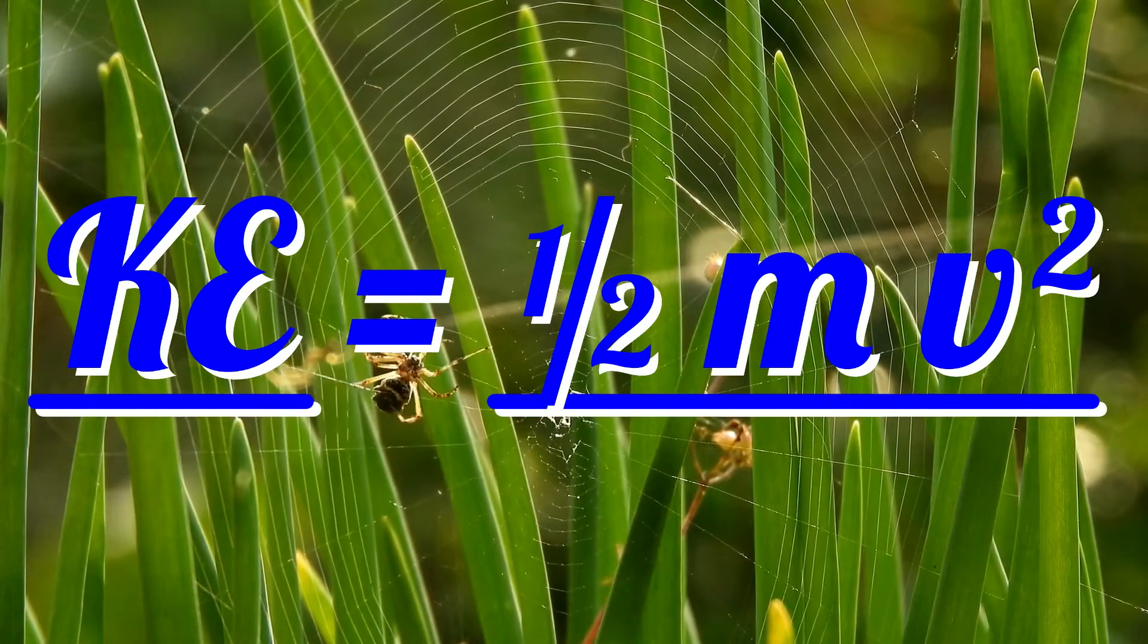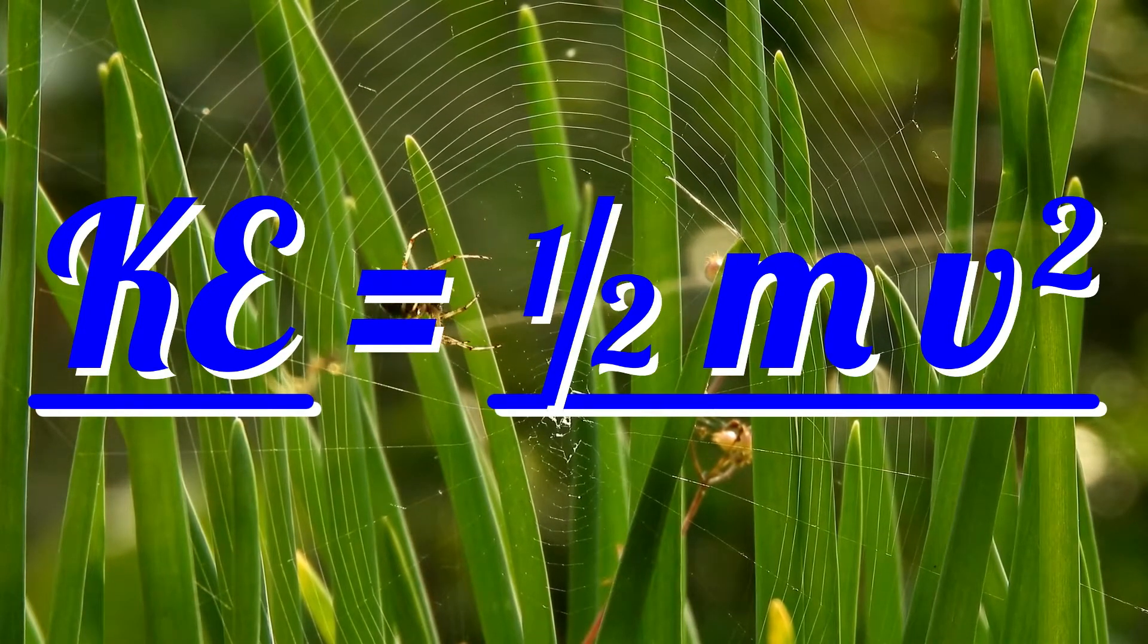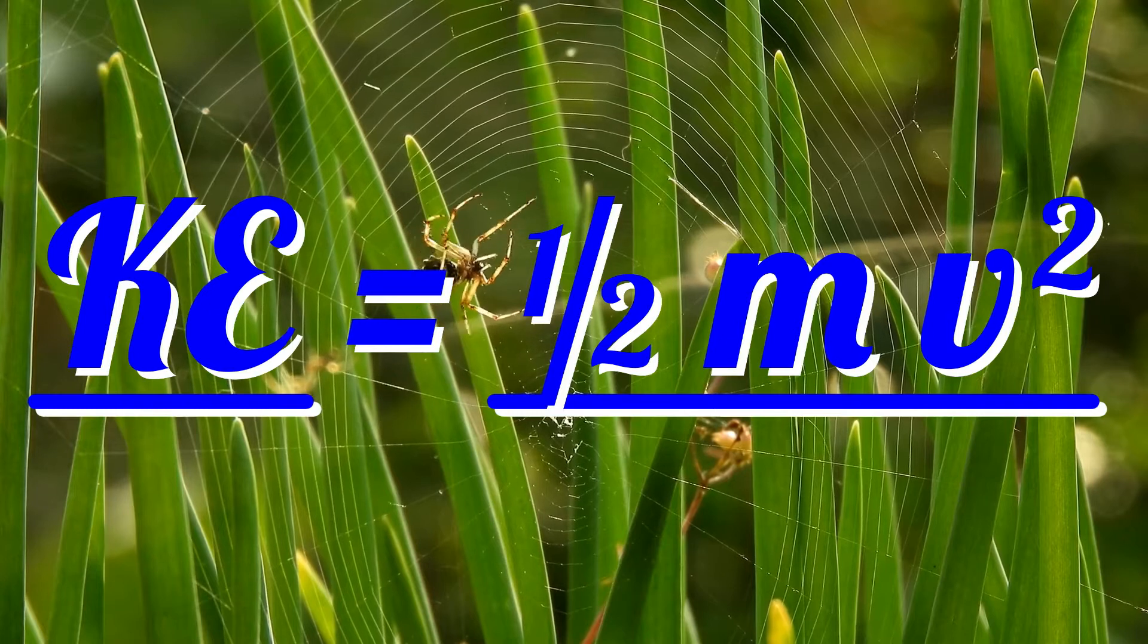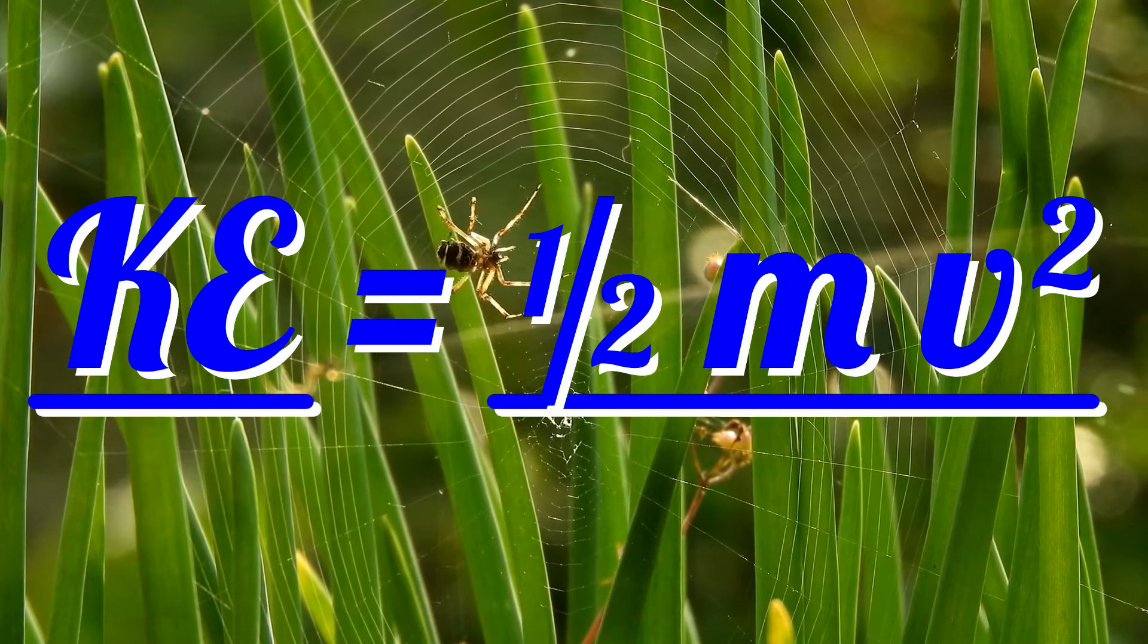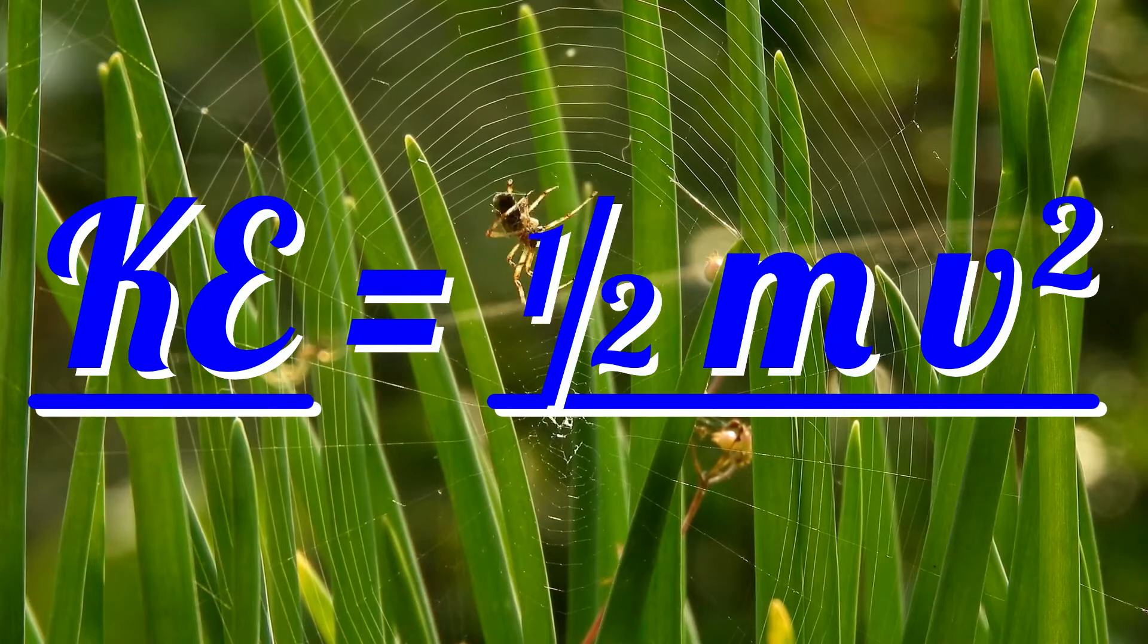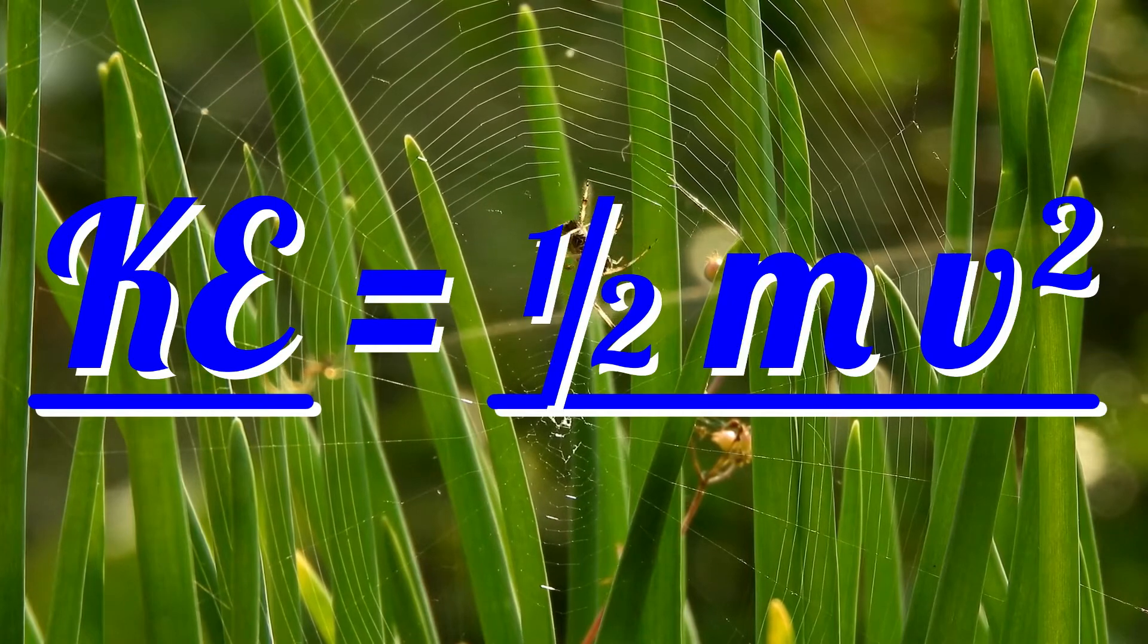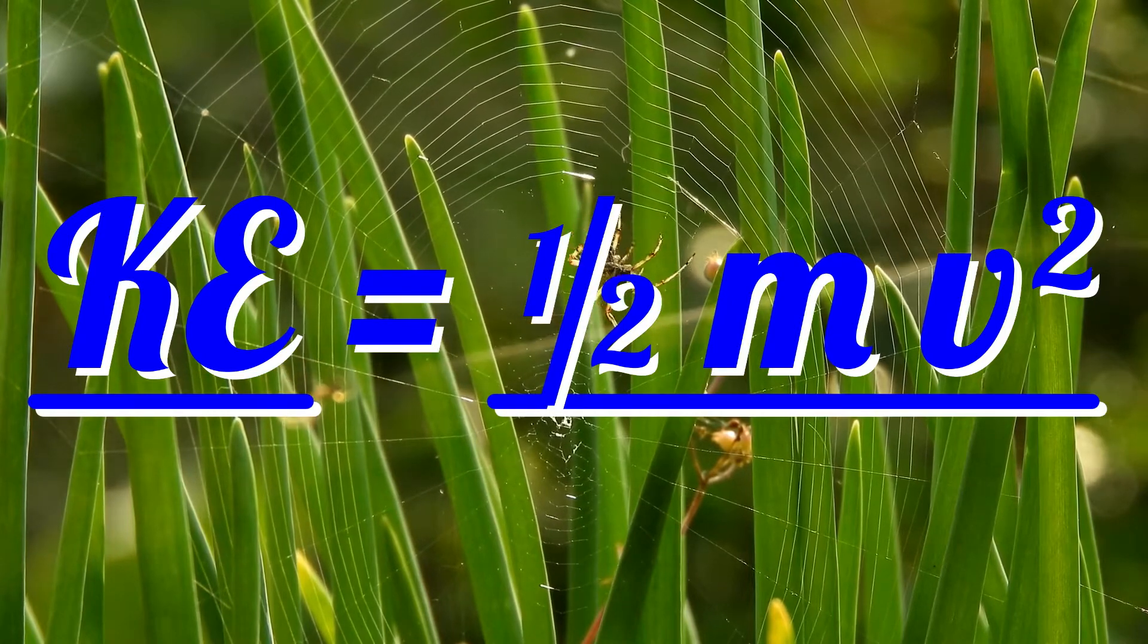If an object has mass and velocity, then it has kinetic energy. This energy is equal to one-half of the mass multiplied by the velocity squared. Note that kinetic energy is proportional to the square of the velocity, so small increases in velocity can have a large effect on the kinetic energy.